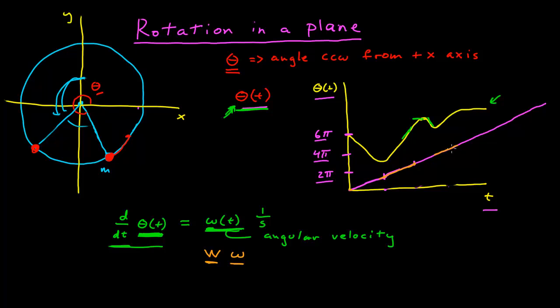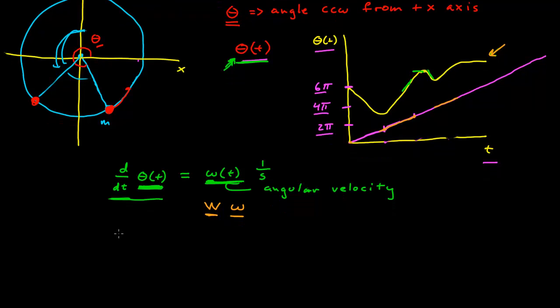But of course, the angular velocity doesn't have to be constant. Like in this case, the angular velocity is changing. And so we can come up with a new function that will tell us how the angular velocity is changing. And we give notationally, by convention, give that alpha as a function of t. It has units of 1 over second squared, and it is called angular acceleration.